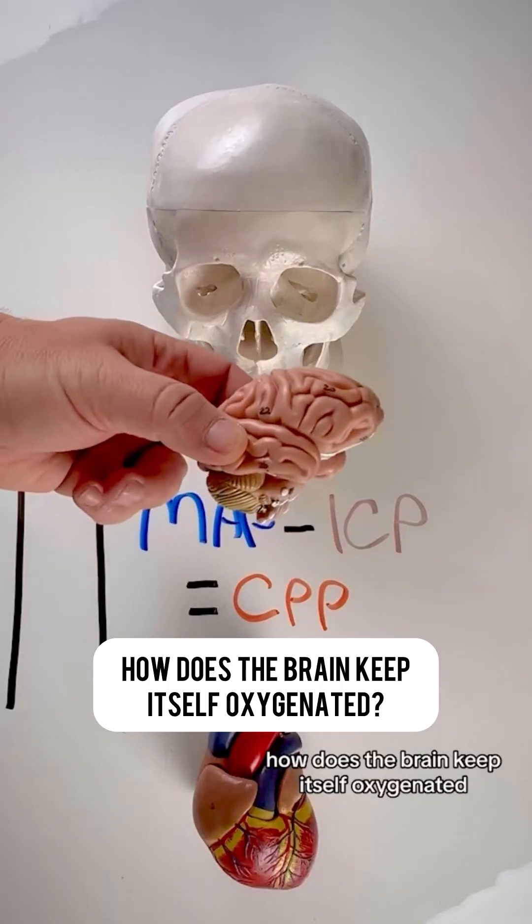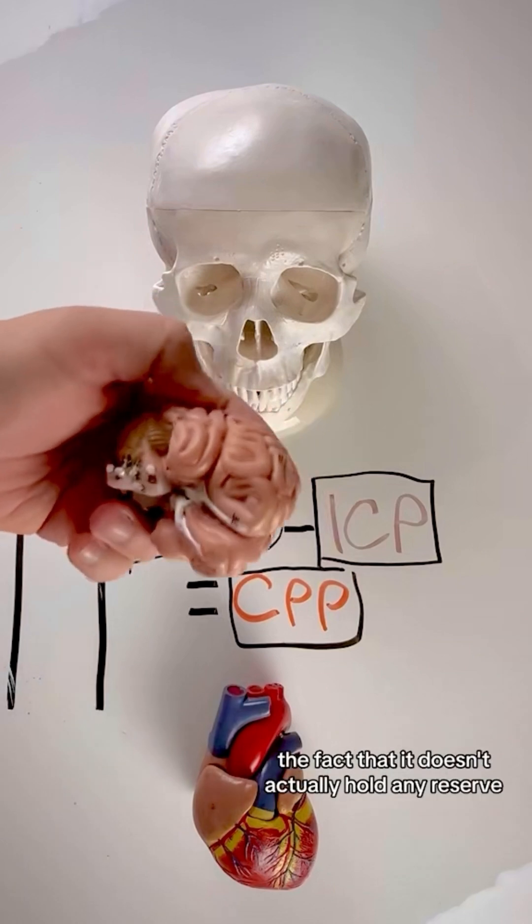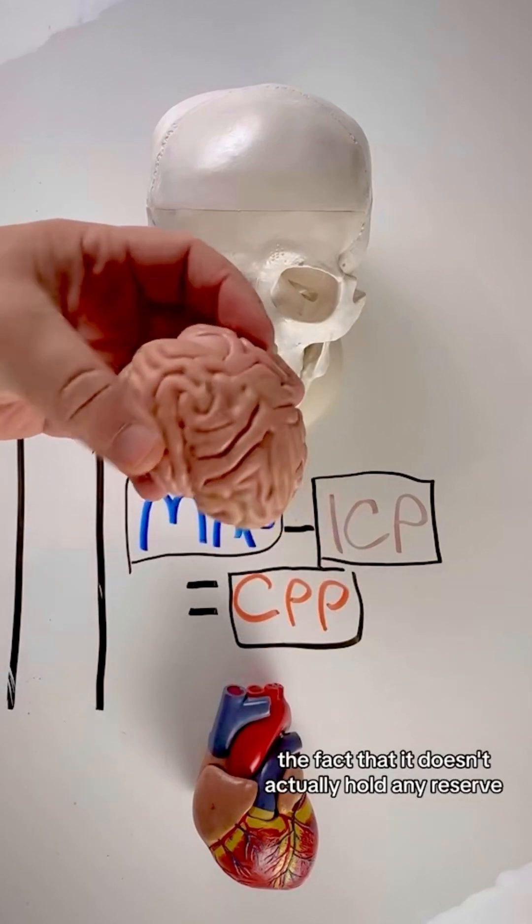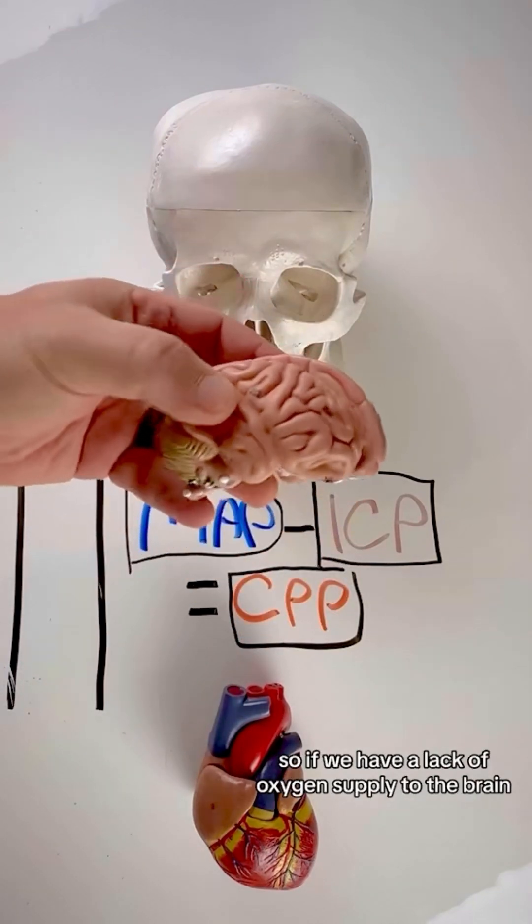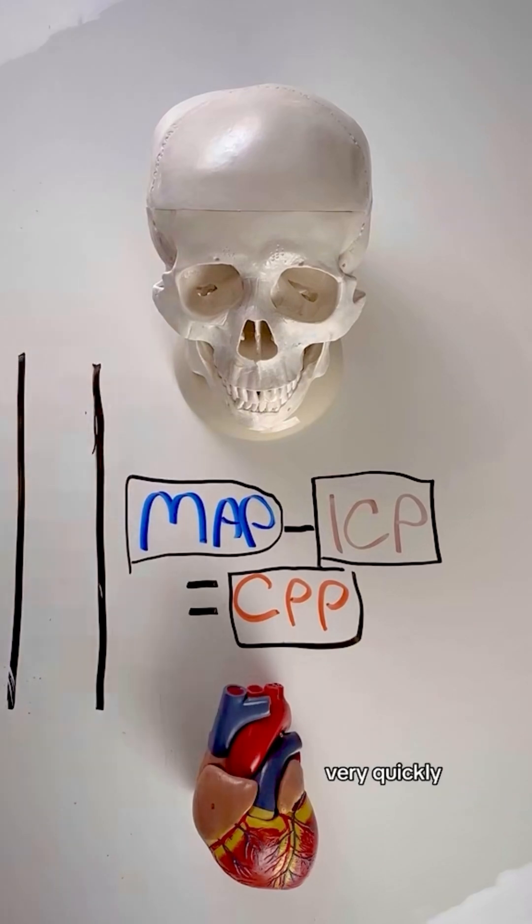How does the brain keep itself oxygenated? Well, let's talk about it. The brain is quite fascinating in that it doesn't actually hold any oxygen reserve. So if we have a lack of oxygen supply to the brain, the brain starts to die very, very quickly.